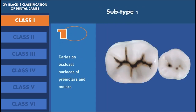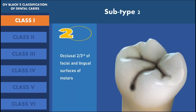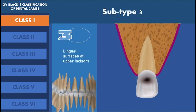This is the most common type of dental caries which can be seen in human dentition. Subtype 2 of class 1 dental caries states that the caries which occurs on the occlusal two-thirds of facial and lingual surfaces of molars. The most common cases seen in this category are the buccal pit caries in the mandibular molars and the palatal pit caries which occurs in the maxillary molars. Subtype 3 of class 1 dental caries includes the caries which occurs on the lingual surfaces of upper incisors.